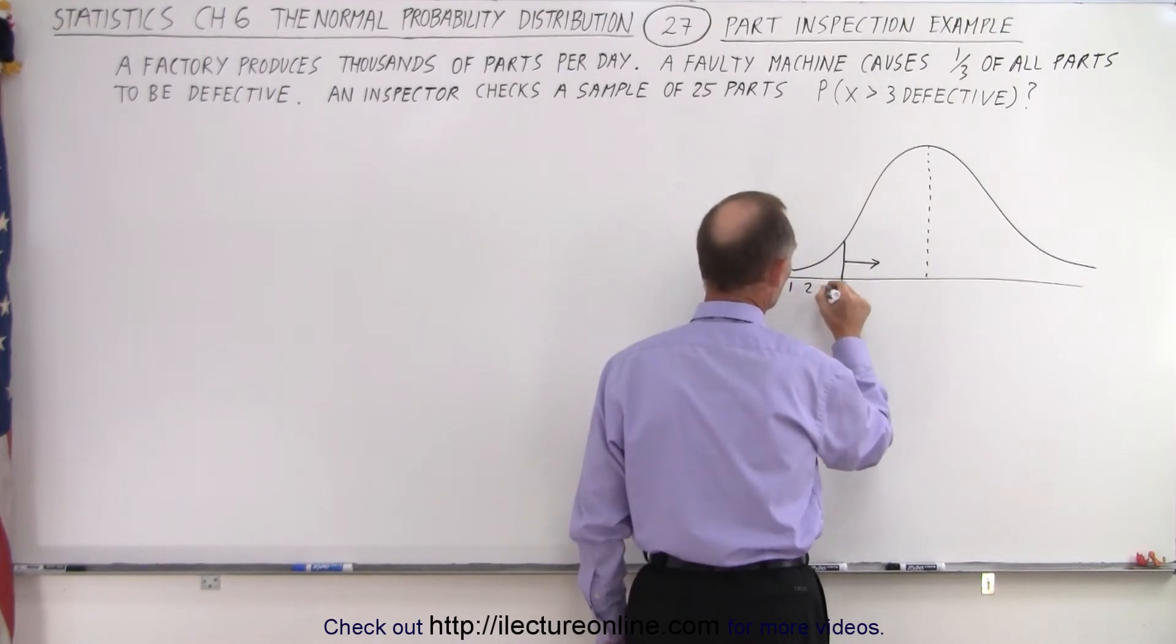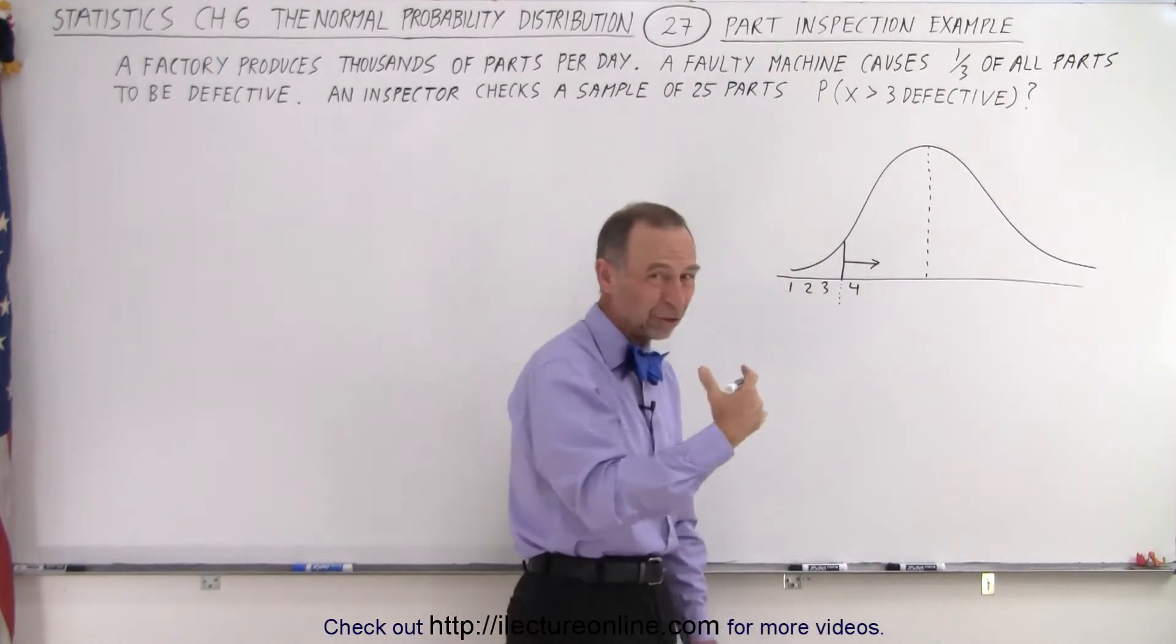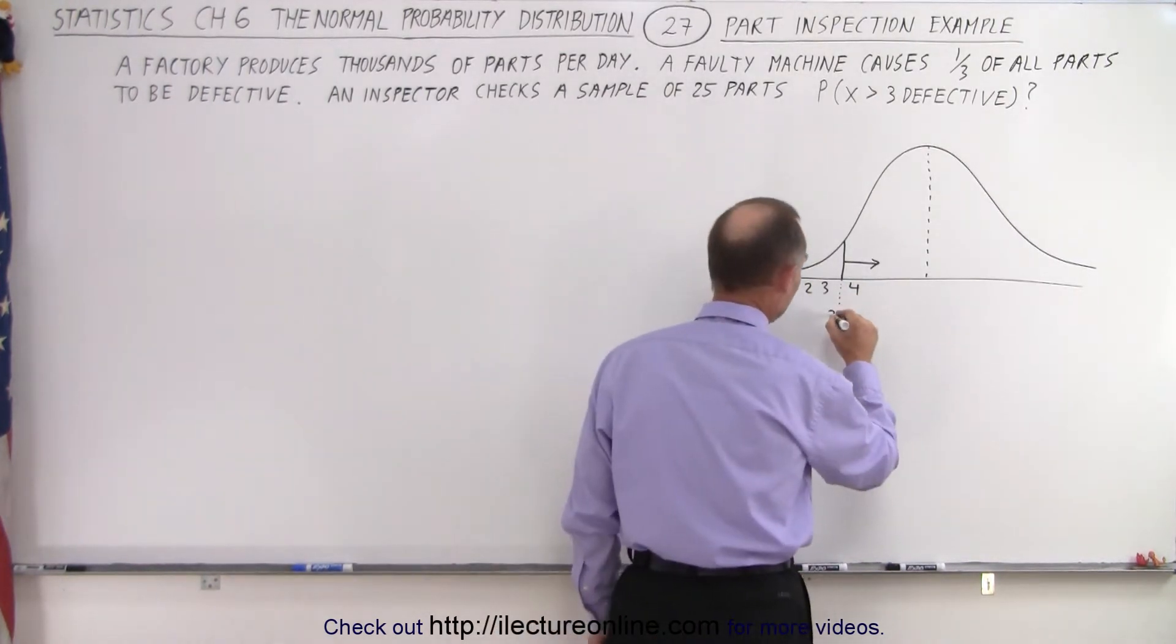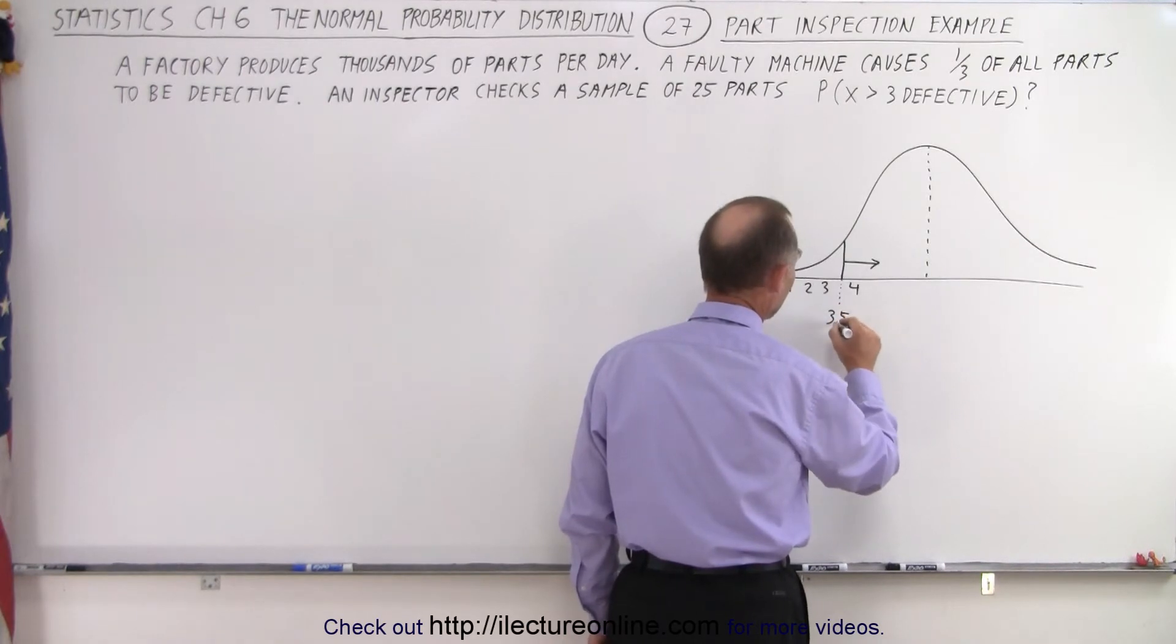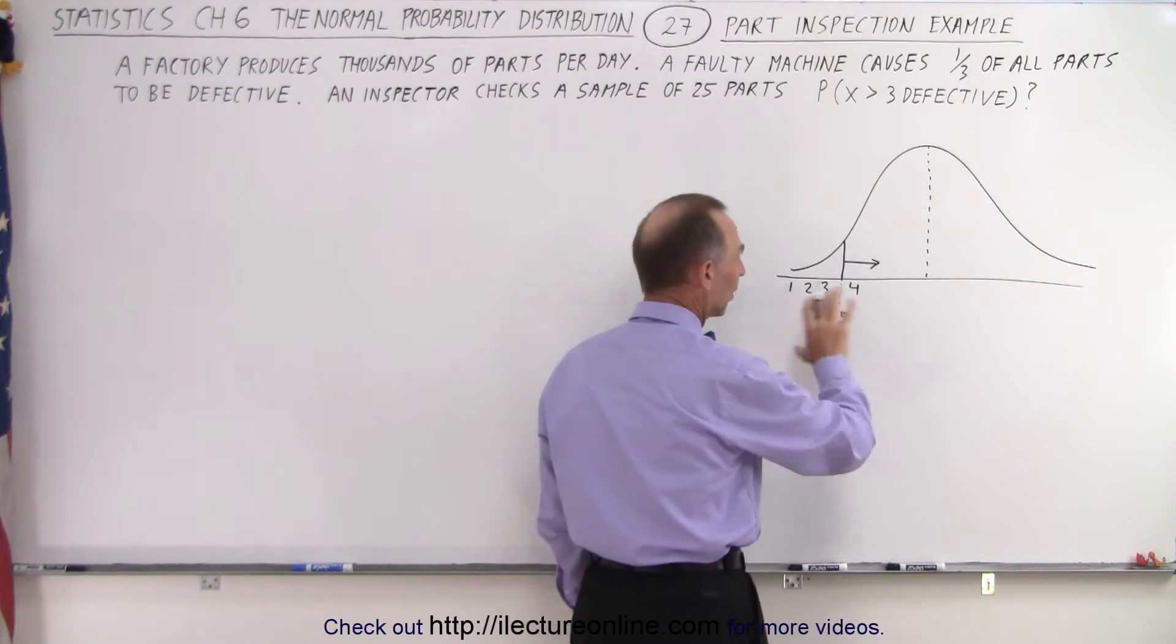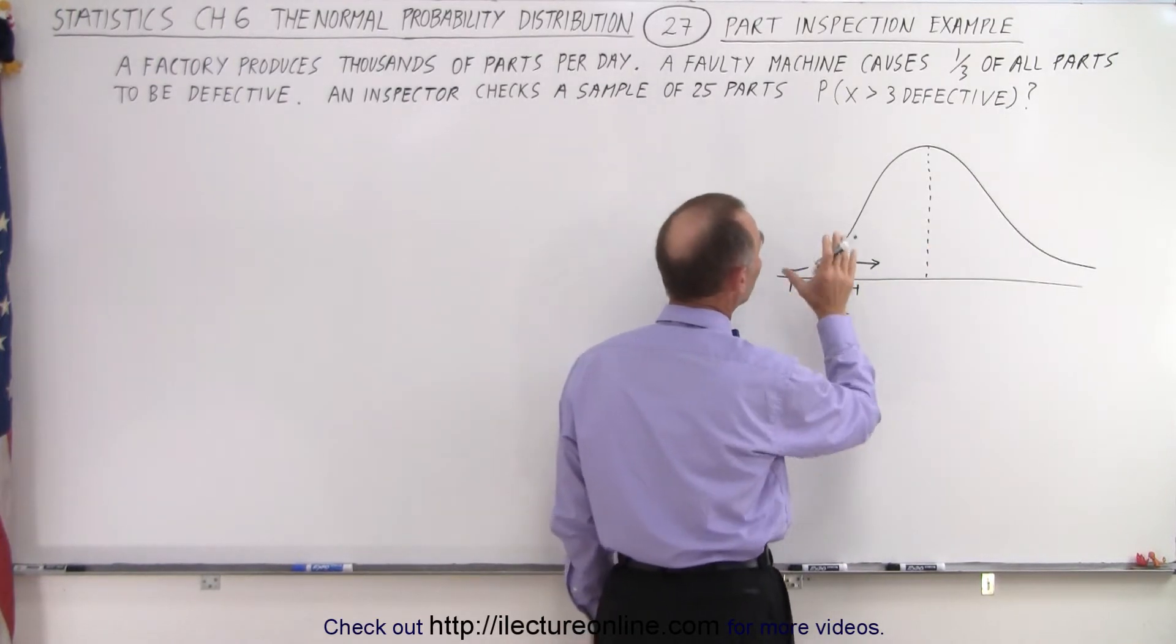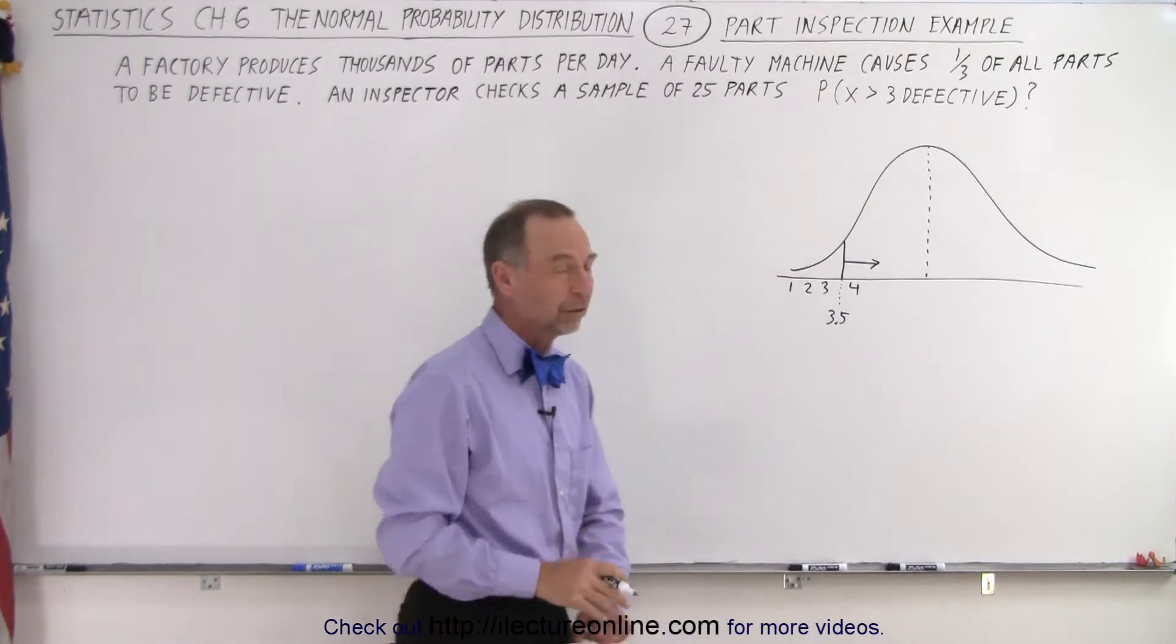So let's say that this is one, two, three defective, this is four defective, so the halfway point between three and four. Since we're talking about integer numbers here, let's pick 3.5 as being the dividing line between three and four defective. So what's the probability that more than three will be defective when we check 25 parts?